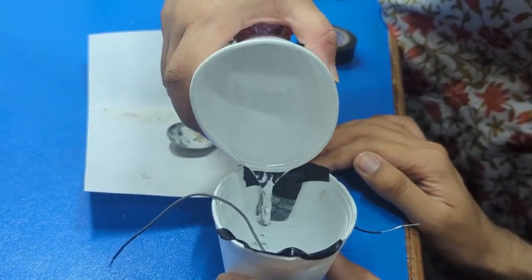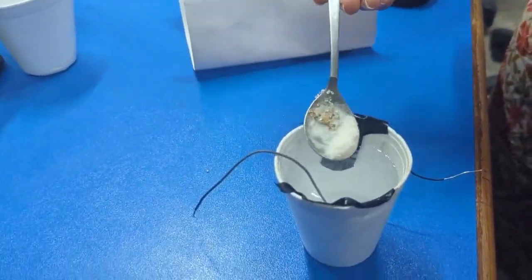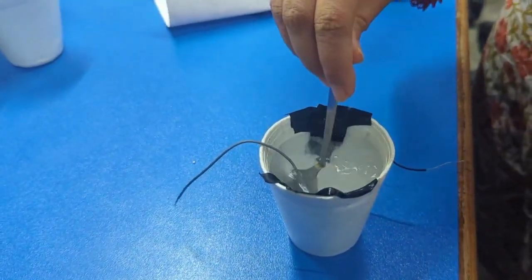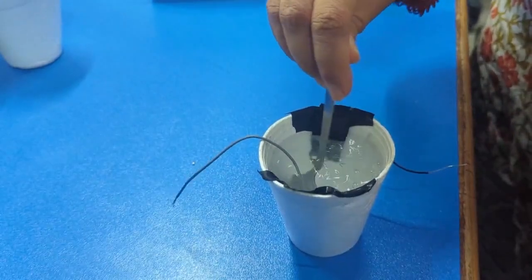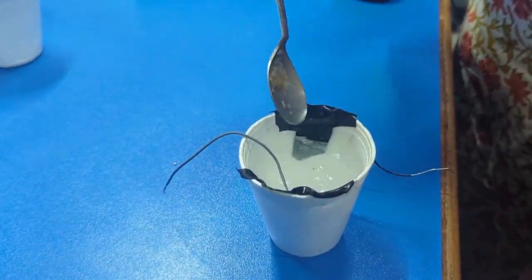Pour a small amount of water into the cup. Add a few teaspoons of salt to the water to form an electrolyte solution, which facilitates the flow of ions between the electrodes.